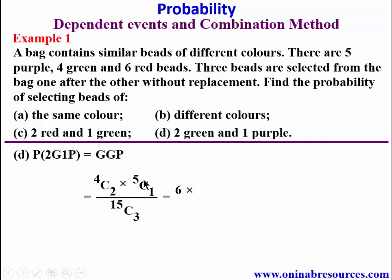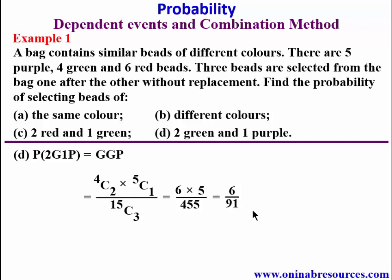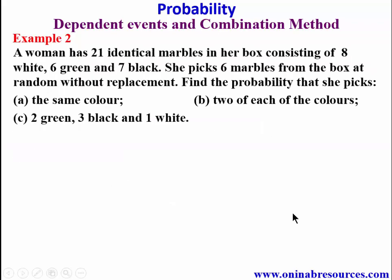4C2 gives 6, times 5C1 gives 5, over 455. That gives us 30 over 455, simplifying to 6 over 91. That is the end of the solution to example one.